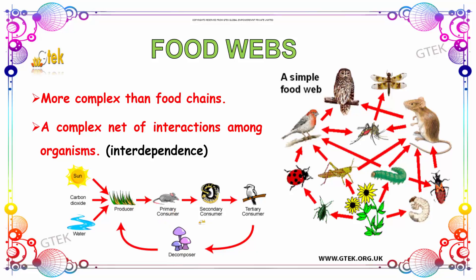From the producer you can see the primary consumer, secondary consumer, and tertiary consumer. Here the decomposer is also present. You can see the small cycle here.